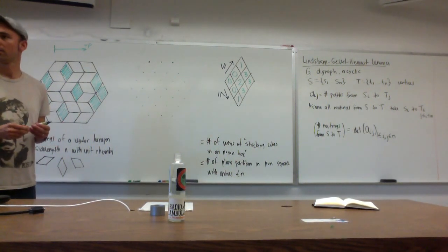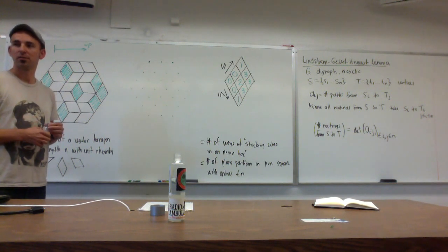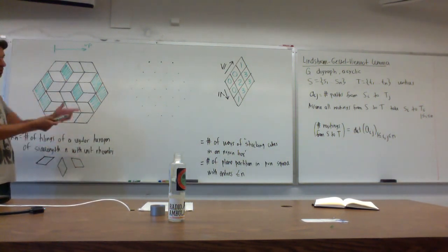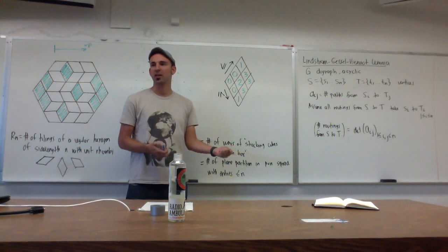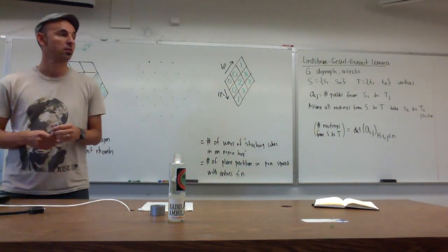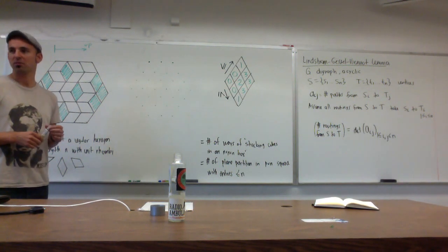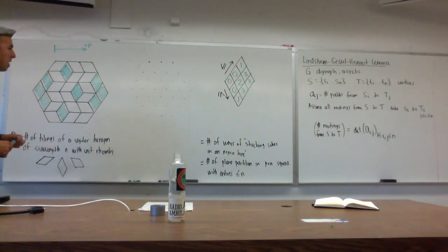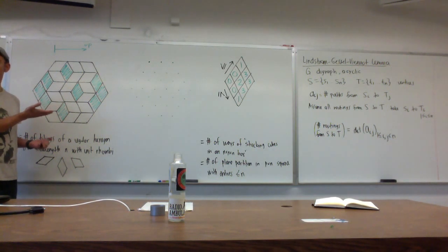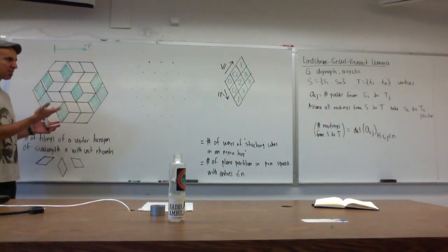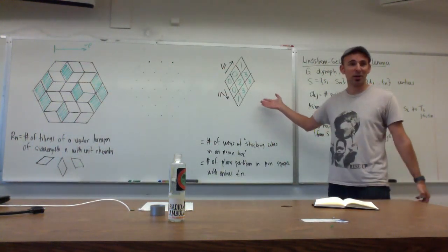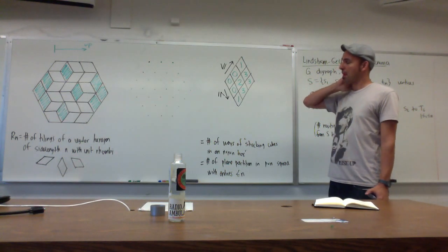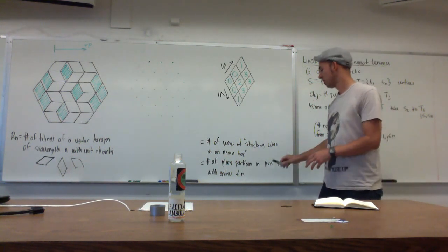You could ask the finer question of what is the number of ways of doing this with exactly k cubes — that's an interesting refinement, and what I'm going to do today also works for that. The point is I want to count this, but it's very unclear how I'm supposed to count it. So I'm going to try to rephrase it. Let me put a little ant here and have it walk across the tiling.